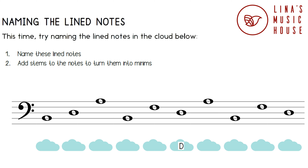The next note is on the fourth line. The fourth word in Good Birds Don't Fly Away is Fly, so this is an F note. The last note is on the third line. The third word is Don't, so this is a D note.